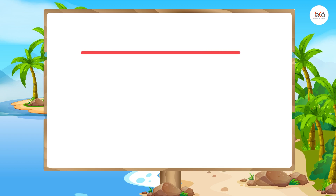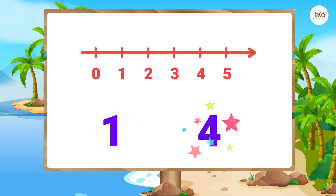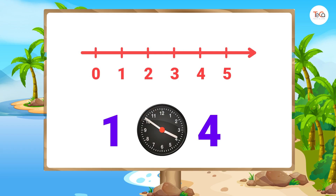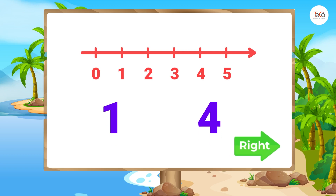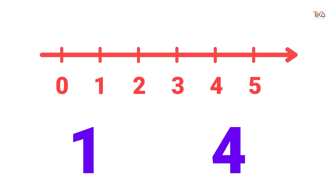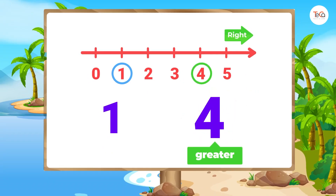Now, use the number line to tell me which number is greater. Have you found the answer yet? To find the number that is greater, just decide which number is to the right of the other on the number line. So here, number 4 is to the right of number 1, so 4 is greater than 1.